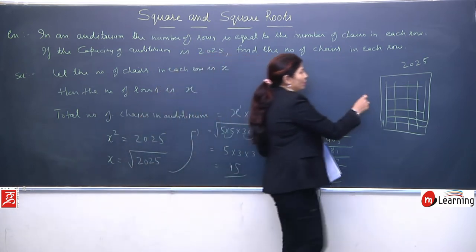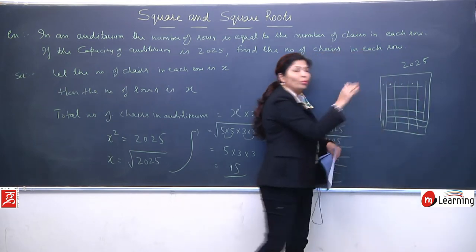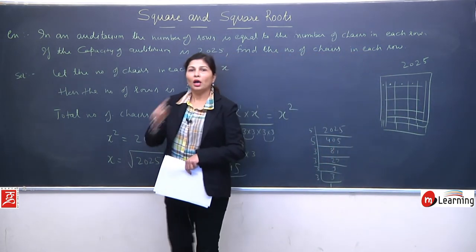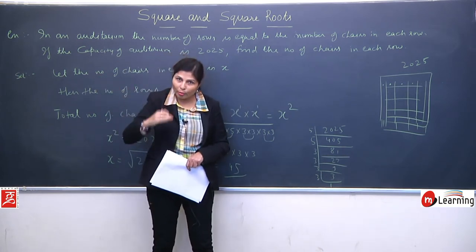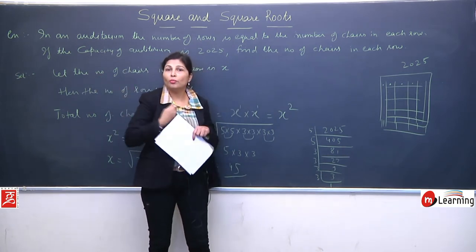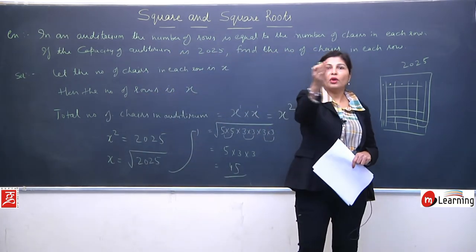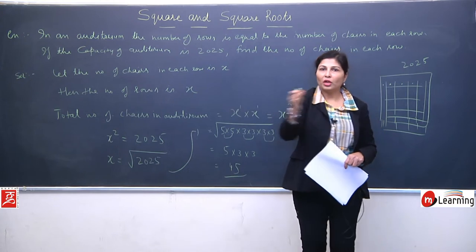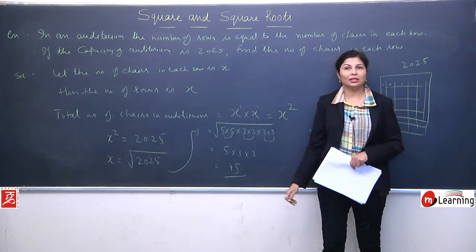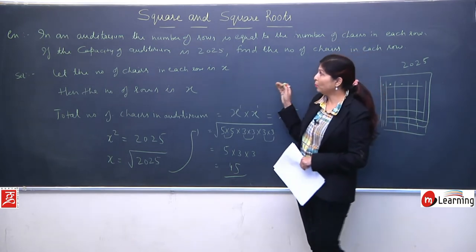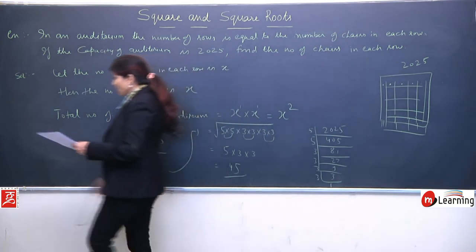This means in this auditorium, the chairs that were placed were 45, and the number of rows was also 45. Each row had 45 chairs, and there were 45 rows. So the auditorium was very large, it had a very large capacity. 45 people in one line, then 45, then 45. Like this up to 45 times they can sit. So this is the application of square root.